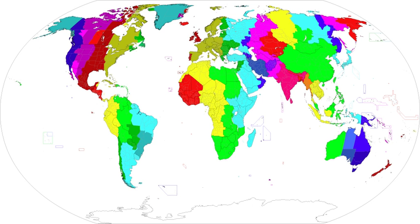In the Middle East, Israel observes UTC plus 3 as daylight saving time (Israel Standard Time). Jordan, Lebanon, Palestine, and Syria also observe UTC plus 3 as daylight saving time. Some stations in Antarctica also use this time zone.